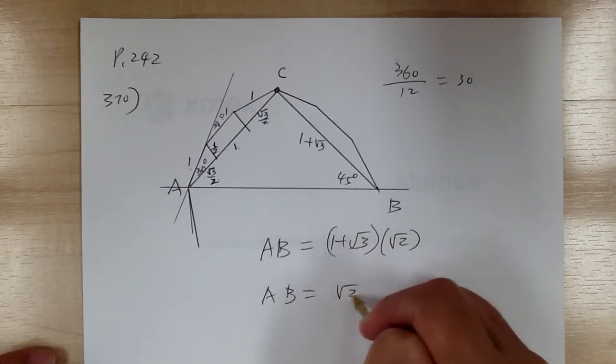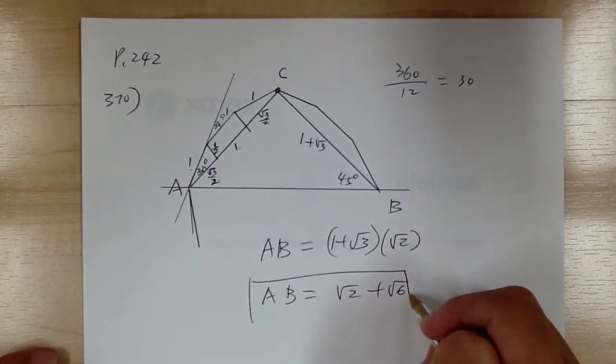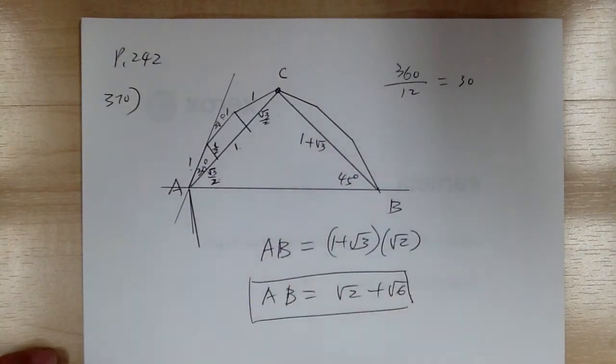And just go ahead and multiply all of these out. So AB equals square root of two plus square root of six. So again, you just need to figure out what the picture looks like and divide it up.